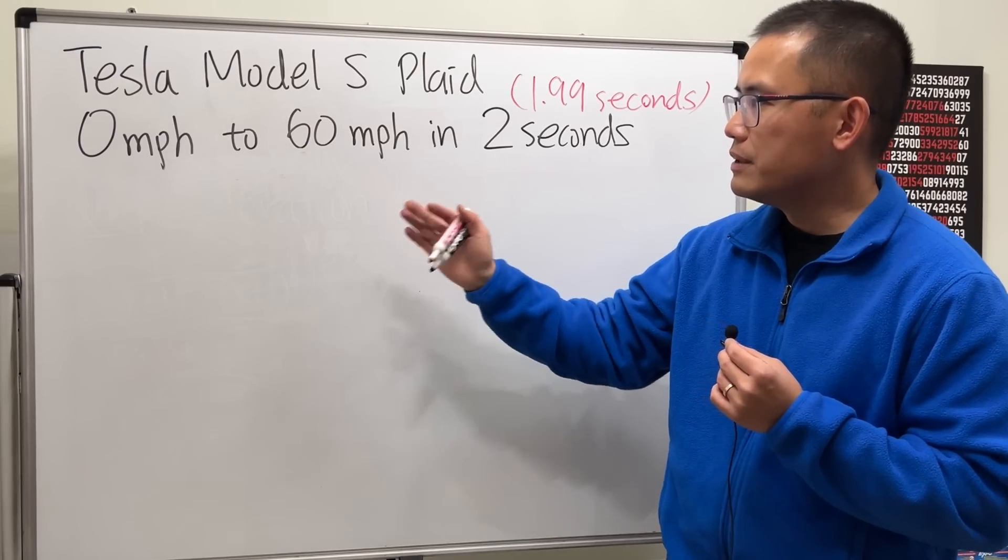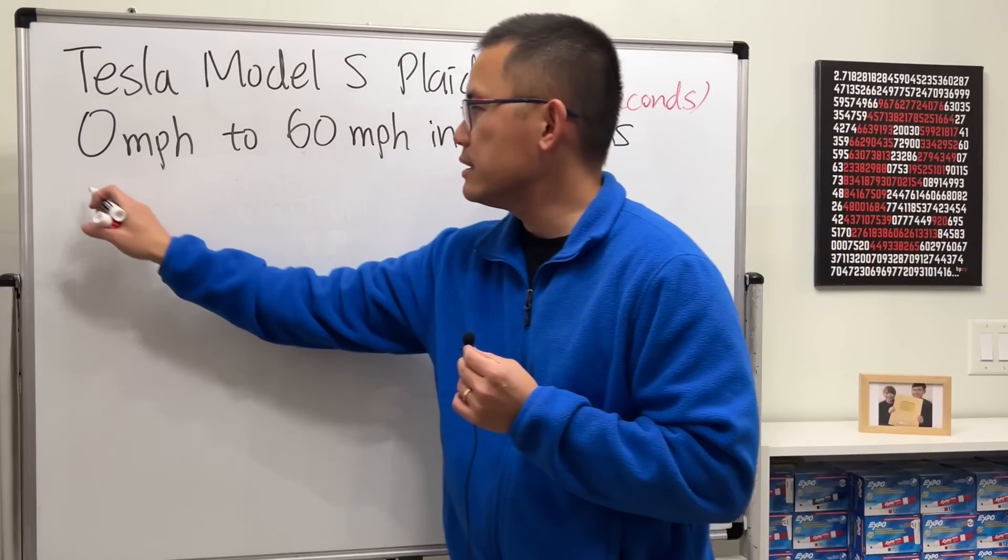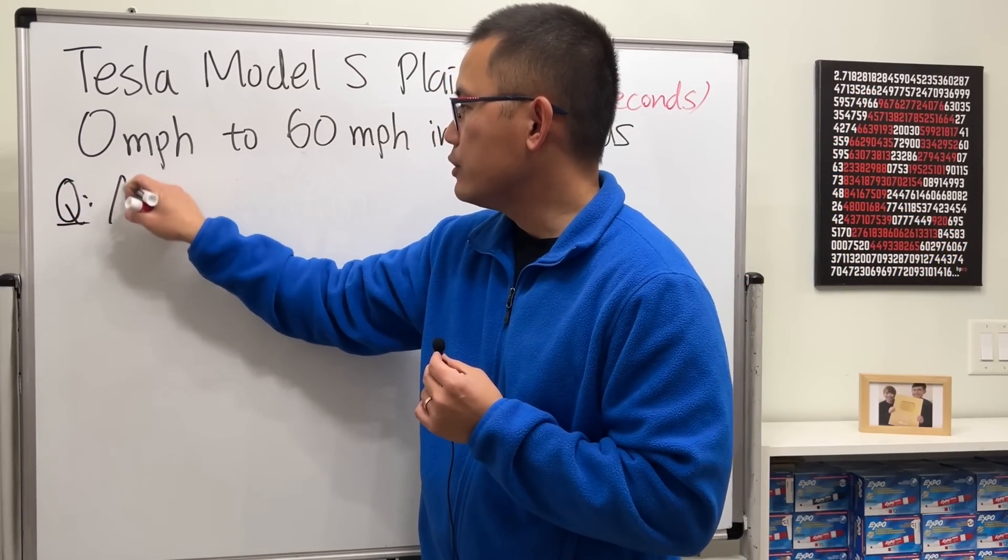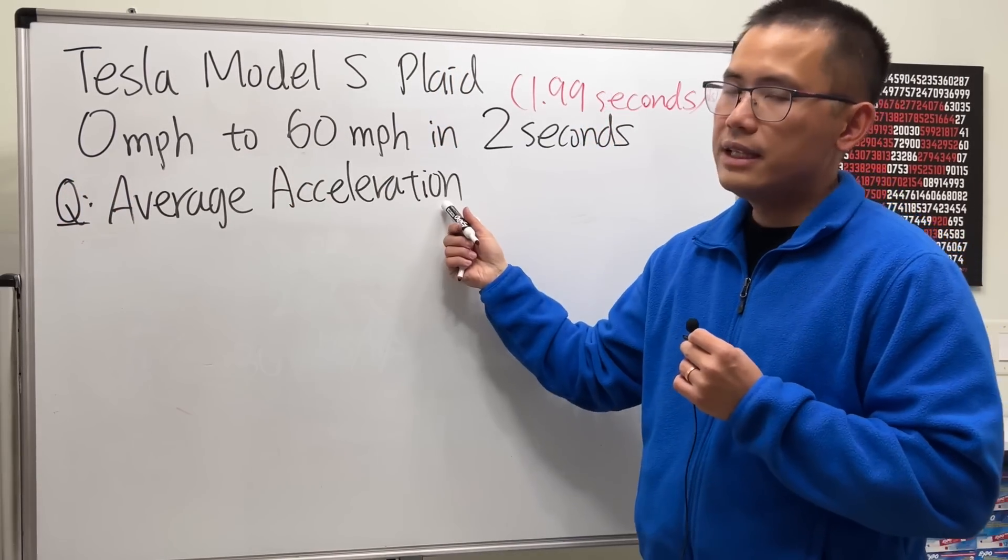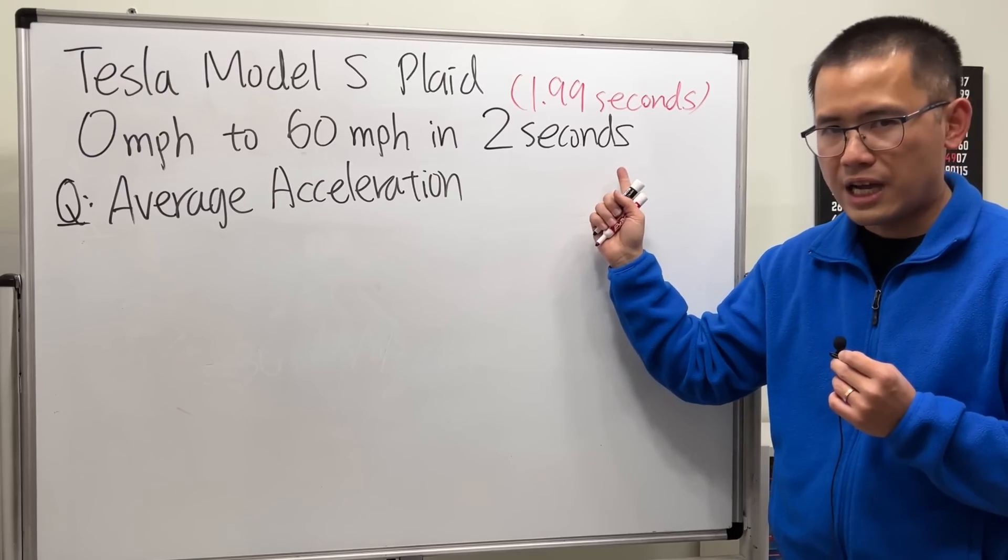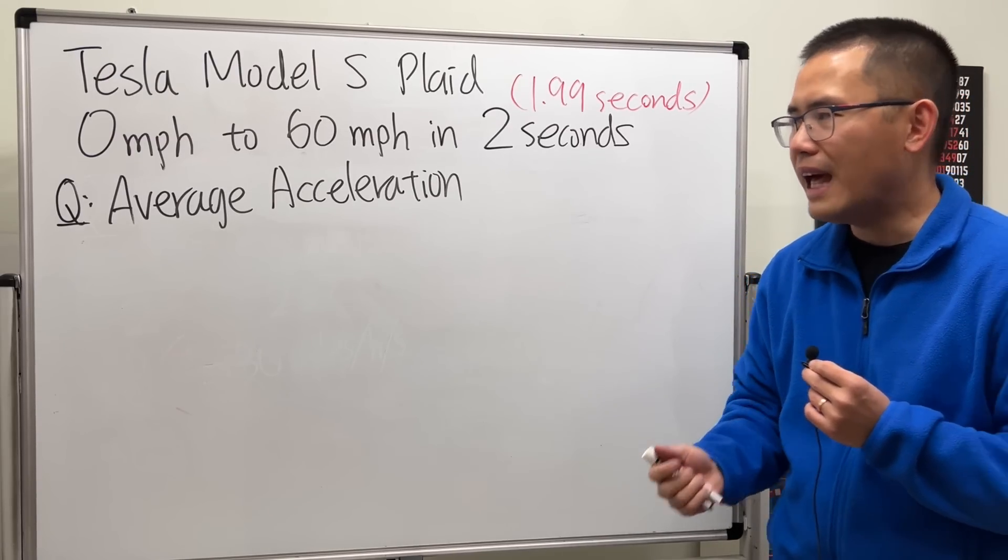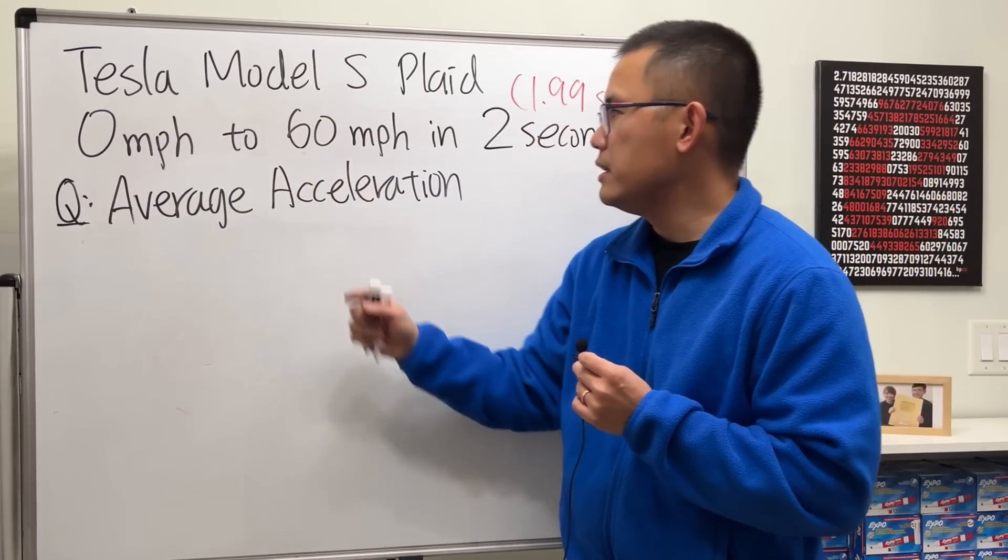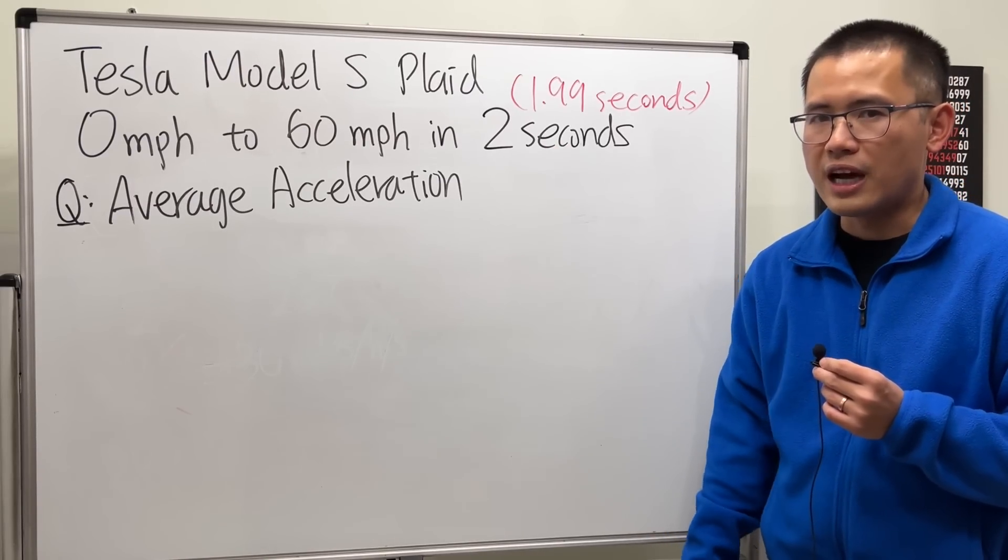And when we have this information we can calculate the average acceleration, and this right here is defined to be the rate of change of the speed over time. It tells you how fast we can increase the speed during a certain period of time.